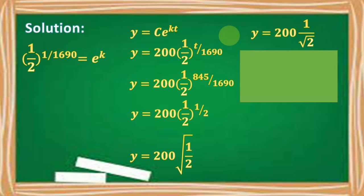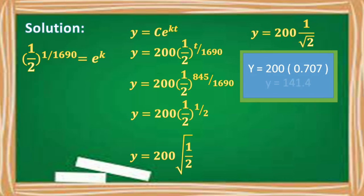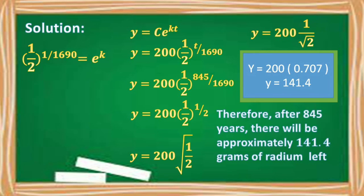Dividing 1 by the square root of 2 equals approximately 0.707. And 200 times 0.707 equals 141.4. Therefore, after 845 years, there will be approximately 141.4 grams of radium remaining.